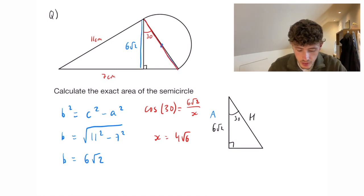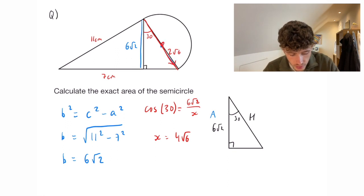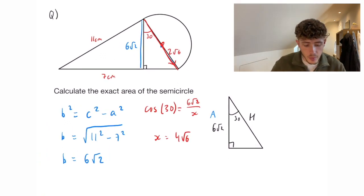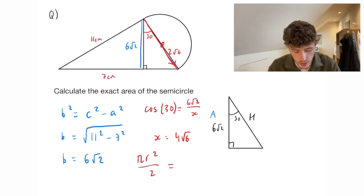Now that is going to be the entire diameter of the semicircle so we want to half that which will be 2 root 6 from the centre to the outside and then we would do pi r squared divided by 2 and that is going to be our area of a semicircle and that is equal to exactly 24 pi.